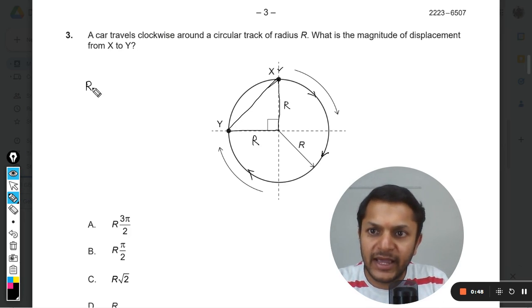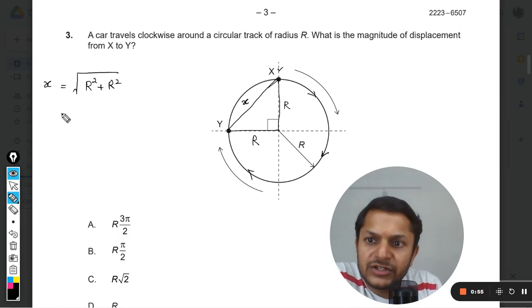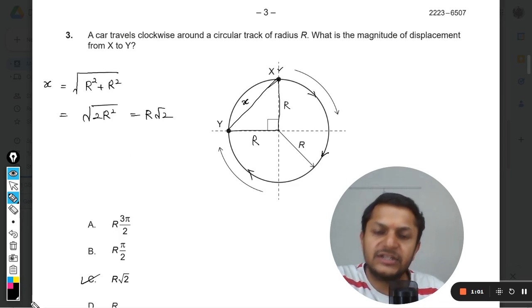So clearly by applying the Pythagorean theorem, it will be this. I can just call it x. So this will be twice of R squared, and thereby it will become R root 2, simple.